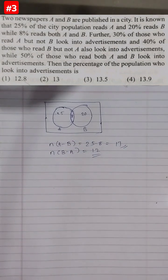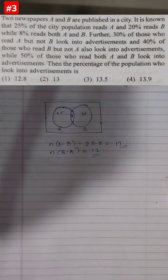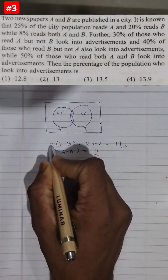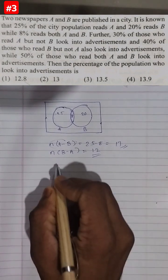Okay, so we got both of them. Now the question's second part says that 30% of those who read A but not B look into advertisements. So 30% of this is looking into advertisements.